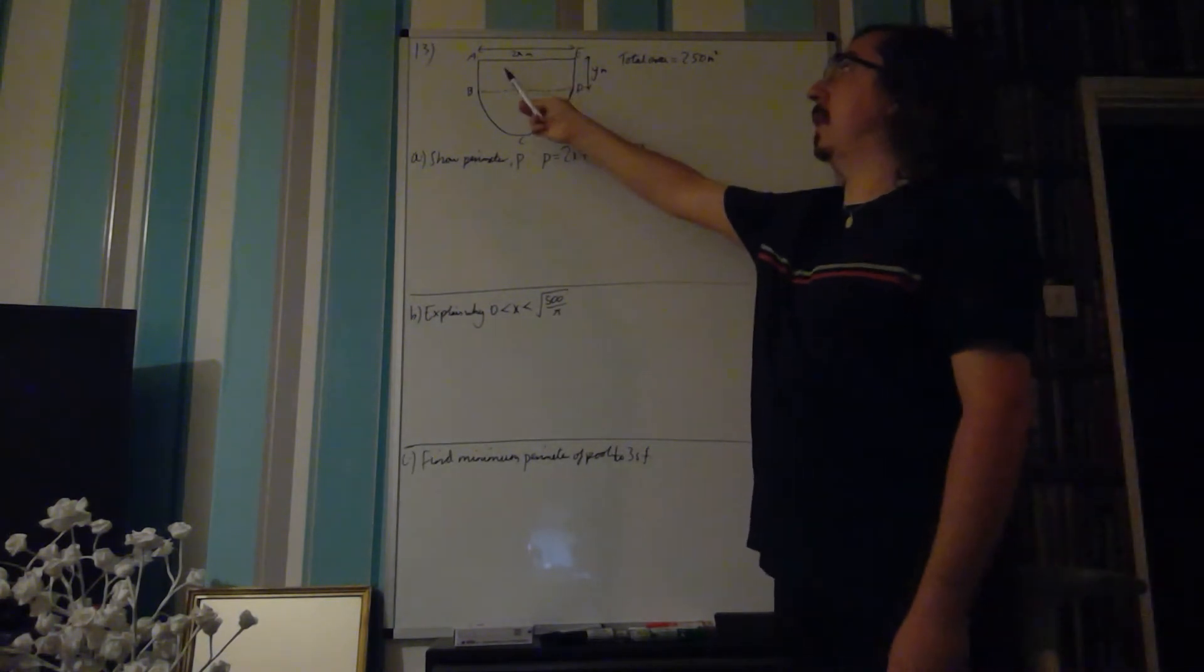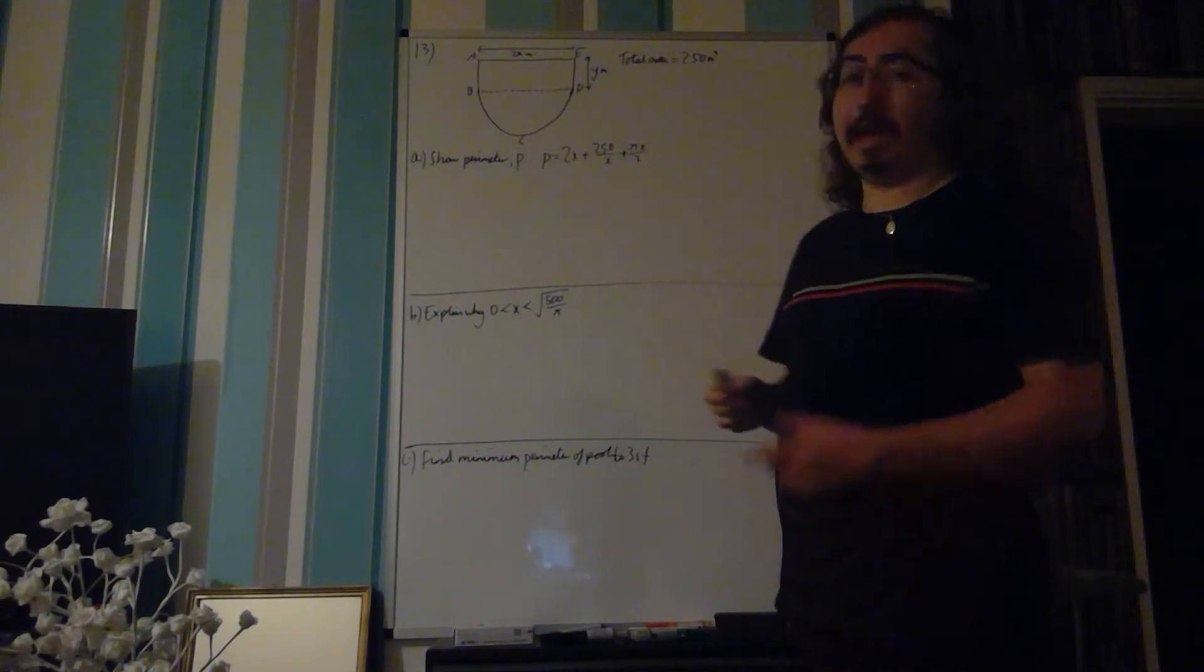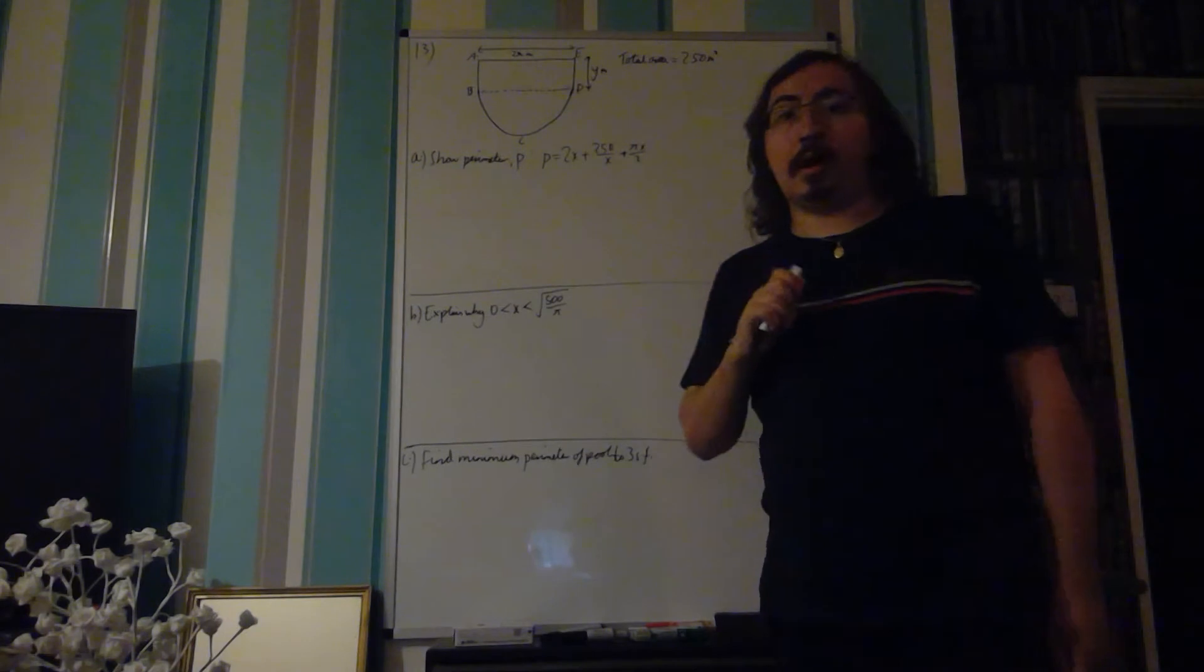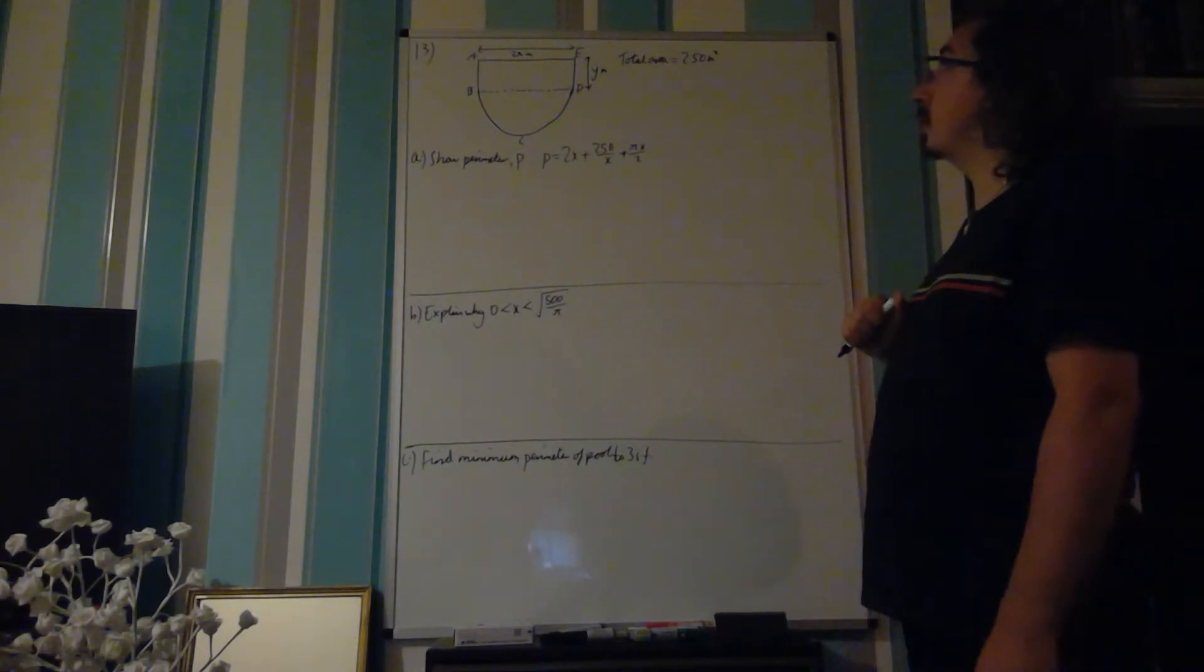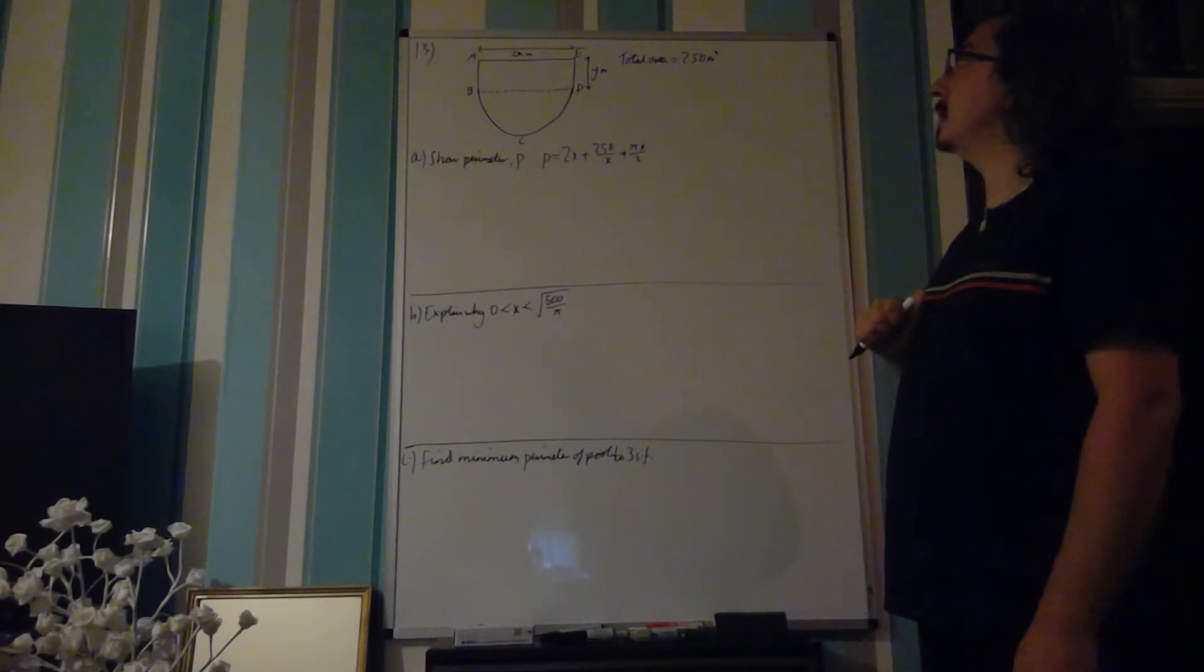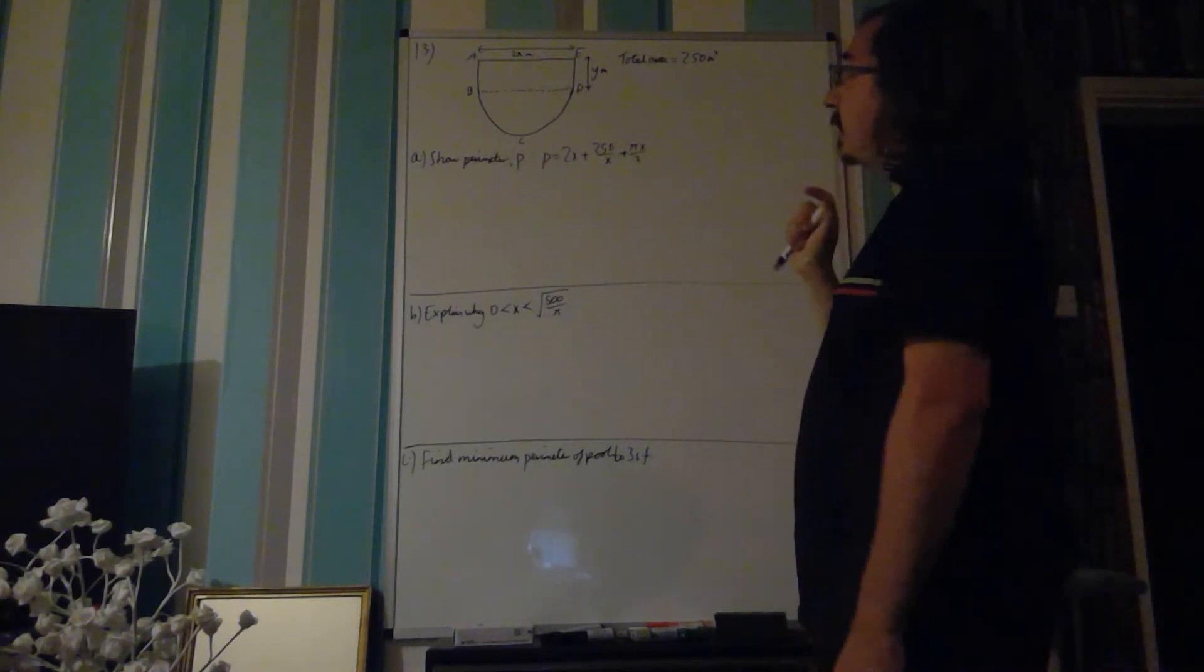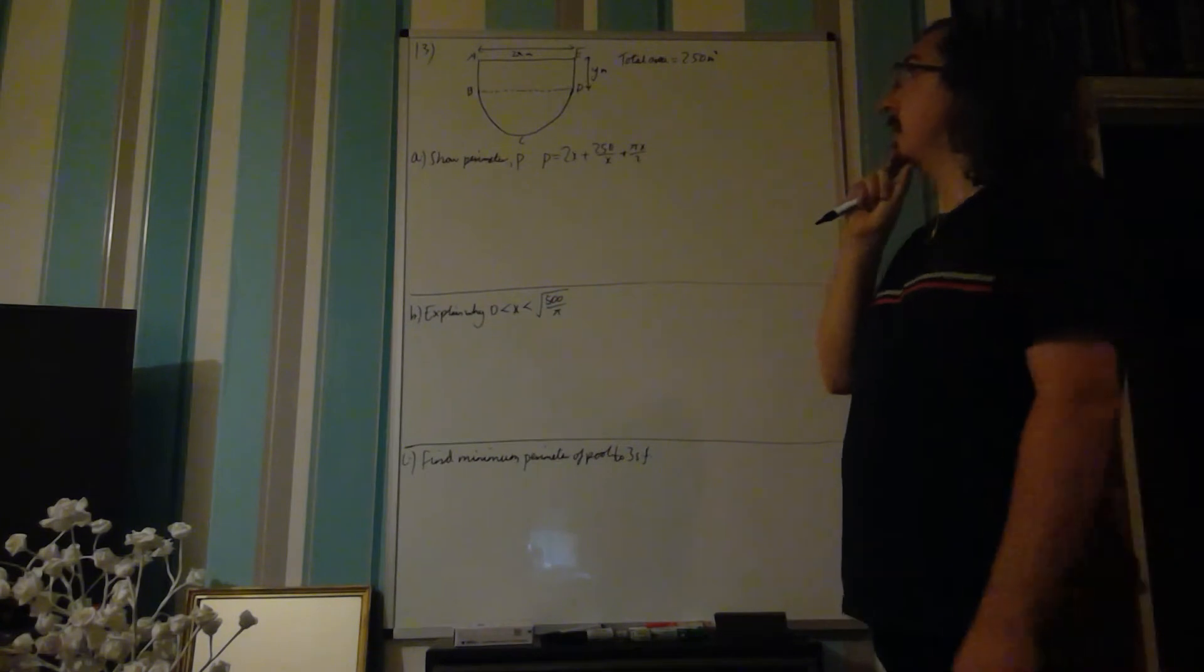We're given a couple of dimensions. We're given the length AE is 2x, and the length ED is y. We're also told that the total area is equal to 250 meters squared. So we have enough parts to be able to deal with this.